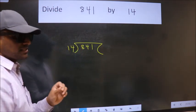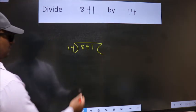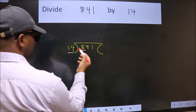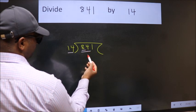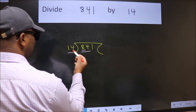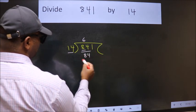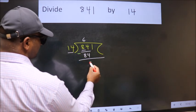This is your step 1. Next, here we have 8, here 14. 8 is smaller than 14, so we should take two numbers: 84. When do we get 84 in 14 table? 14 times 6 is 84. Now we should subtract, we get 0.